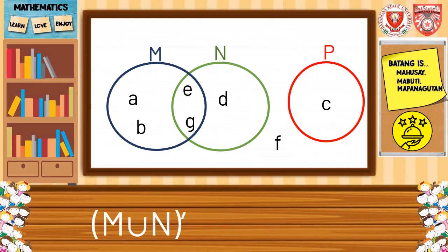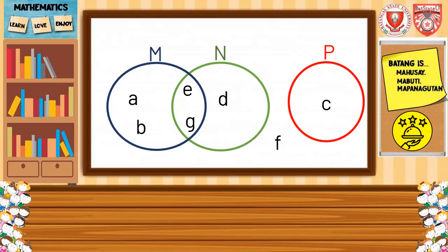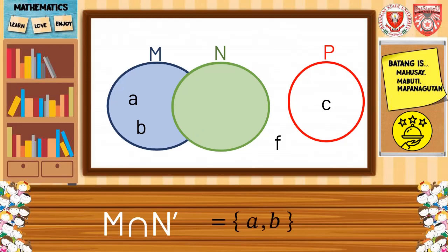Let us have a more challenging activity. We're going to find the complement of M union N. We remove all the elements in M and N; the remaining elements in the universal set give the complement of M union N, which is {C, F}. Next, we find M intersecting the complement of N. The elements of M are A, B, E, and G. We remove all the elements in N, so M intersecting the complement of N equals {A, B}.